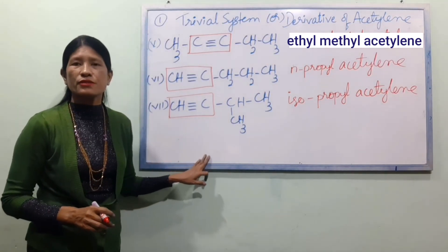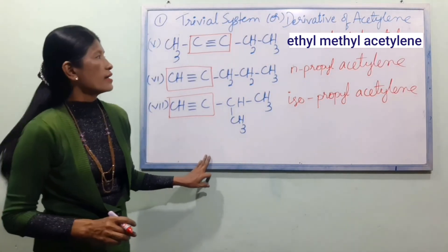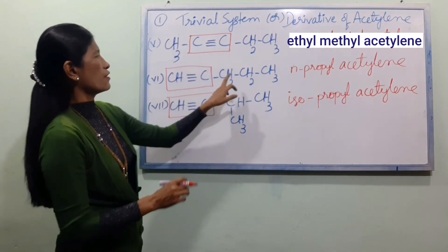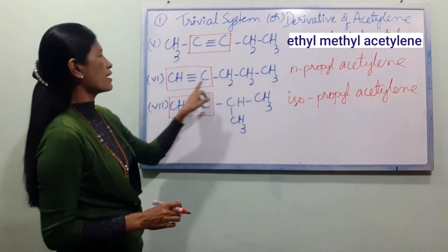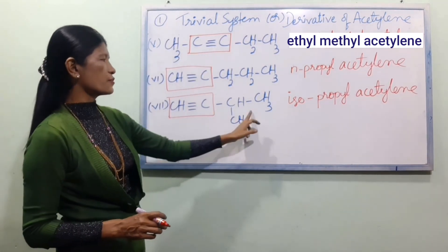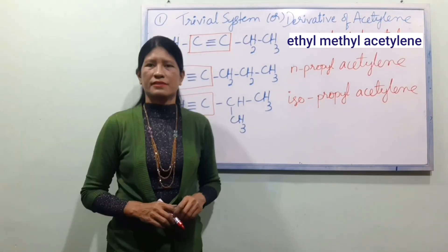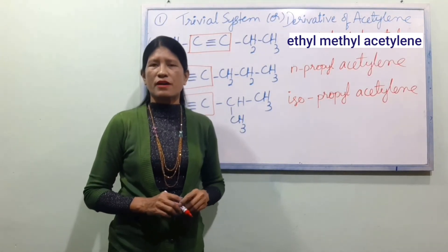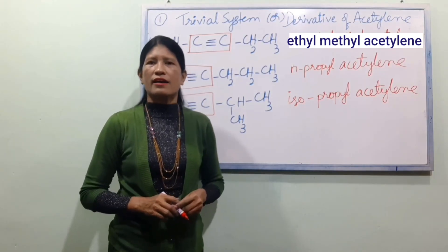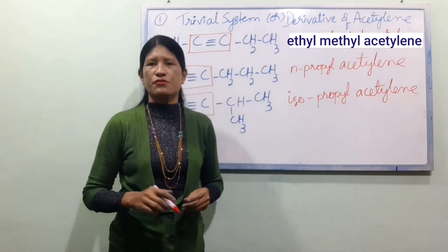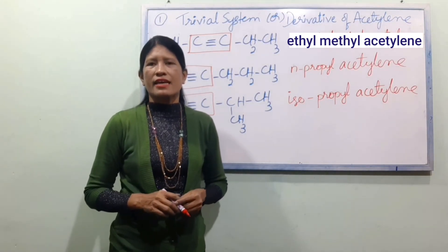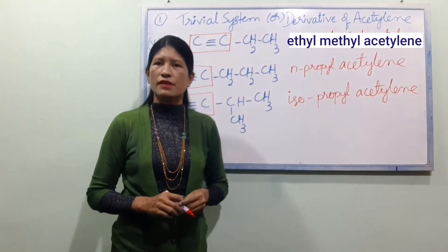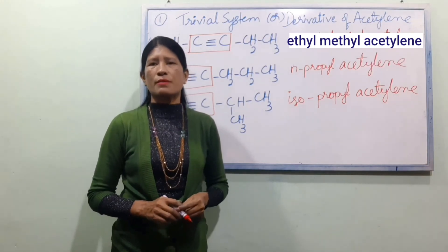We have to use this method: ethyne, propyne, acetylene, iso-propyl acetylene. In this method we have to use the molecular formula, structural formula, and graphic formula. We have to use the previous system or derivatives of the acetylene system.